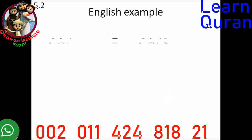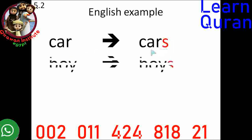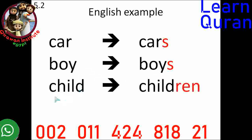I'd just like to start off with an example in English. If we have the word 'car', it becomes 'cars' — all we did was add an S. If we had the word 'boy', we just add an S to make 'boys'. These are regular plurals. But if we have the word 'child', we can't just add the letter S to make the plural. We actually have to add a whole new suffix, R-E-N: children. So sometimes we have plurals that follow simple rules, and sometimes we have plurals that follow complex rules.